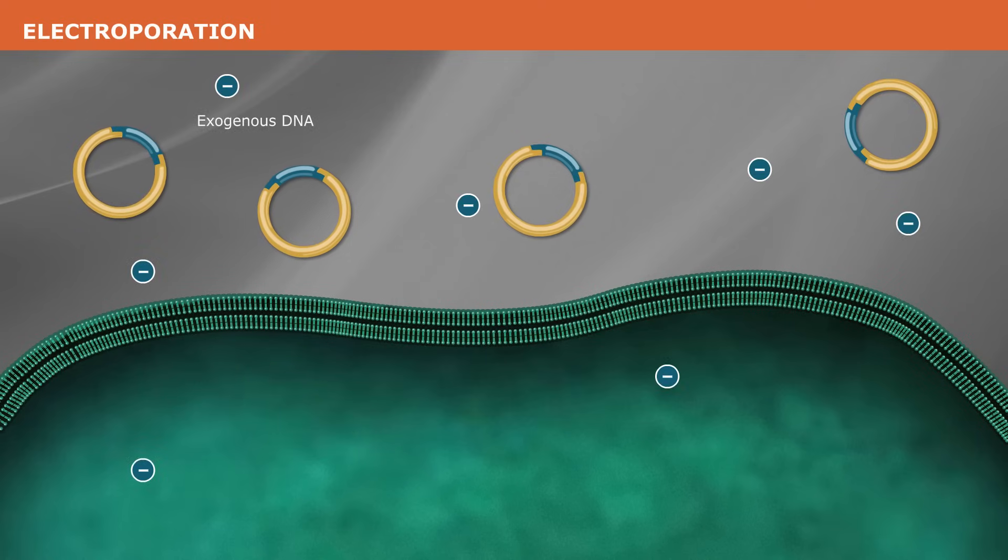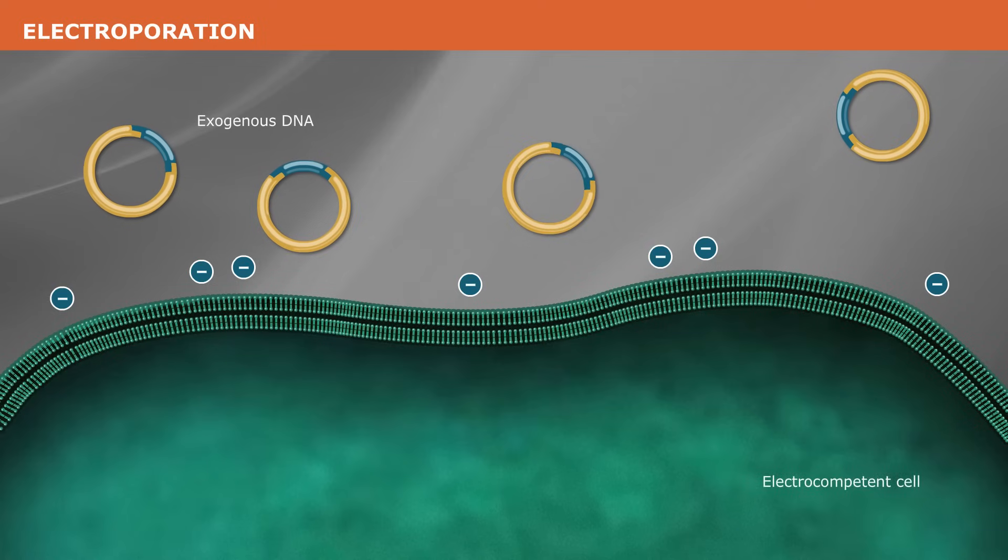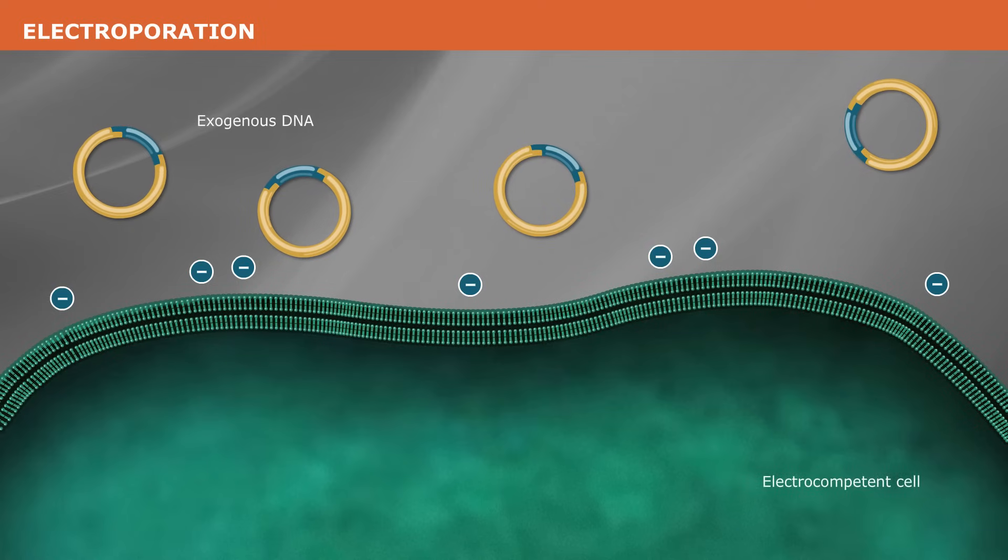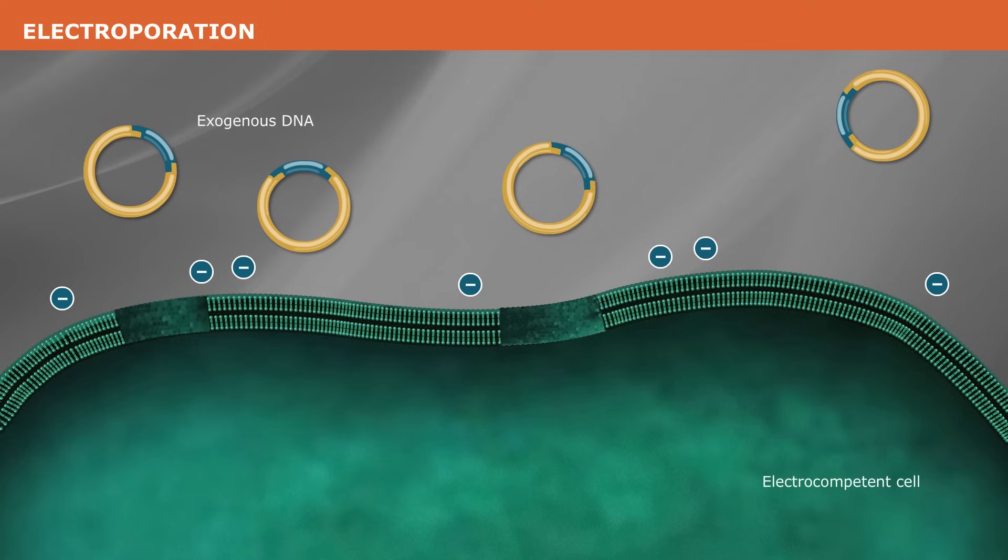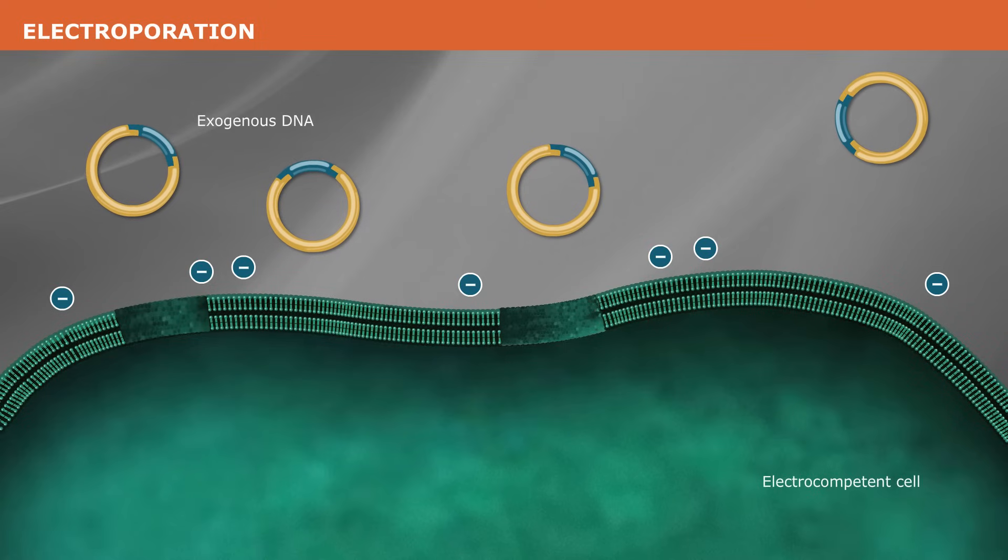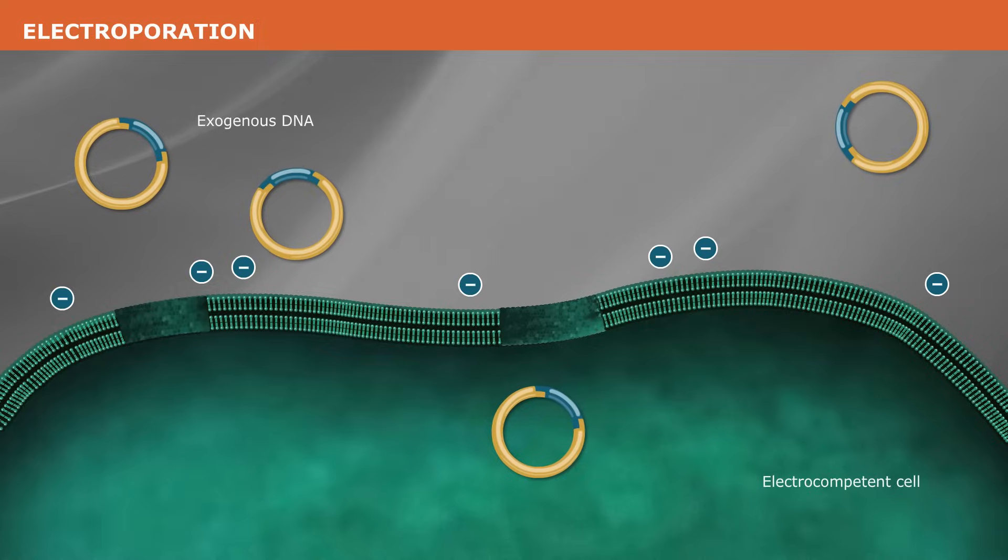Electroporation involves the application of an electrical field to the competent cells in suspension, thereby introducing holes in the cell's perimeter. The newly compromised cell wall allows exogenous DNA to pass into the cytosol of the bacterium.